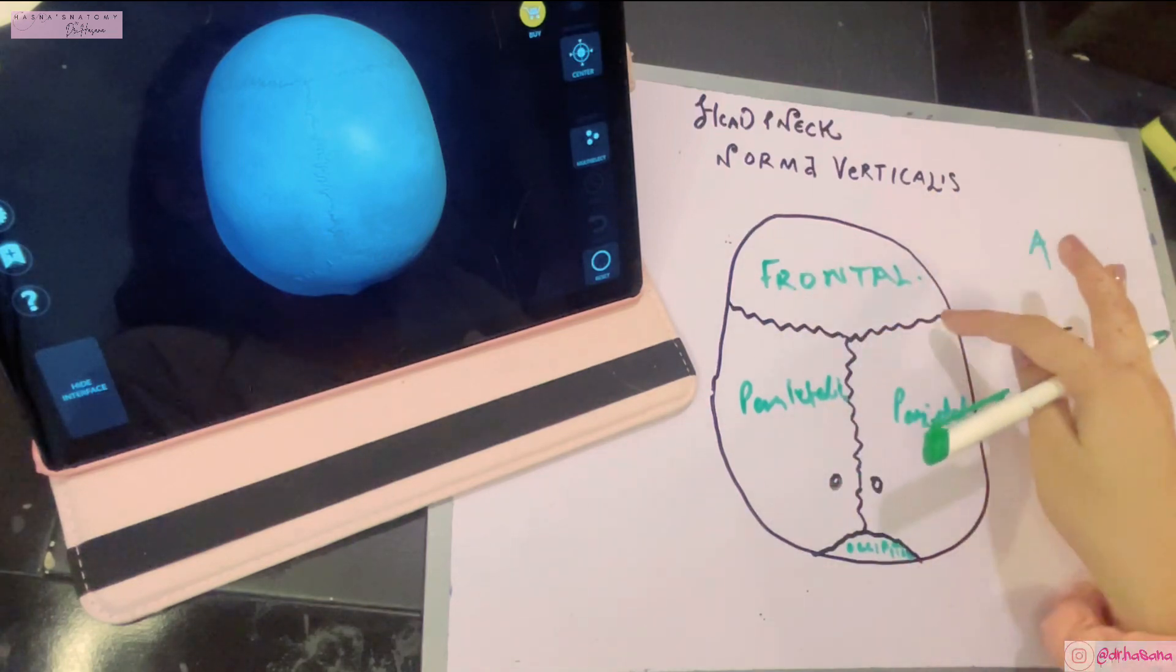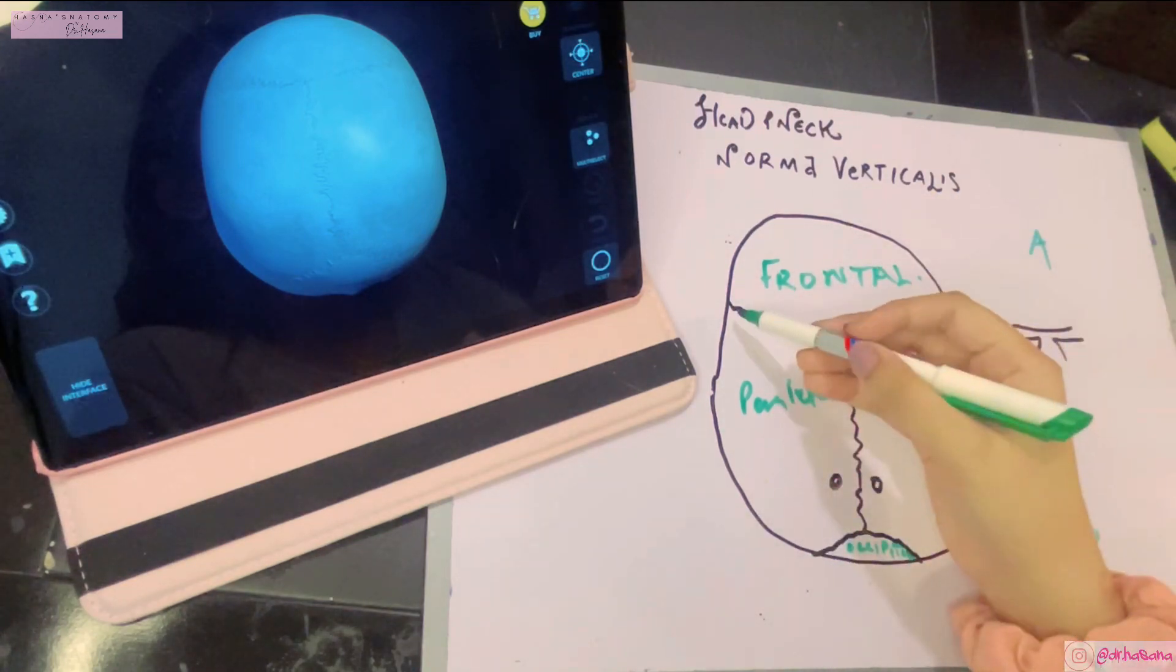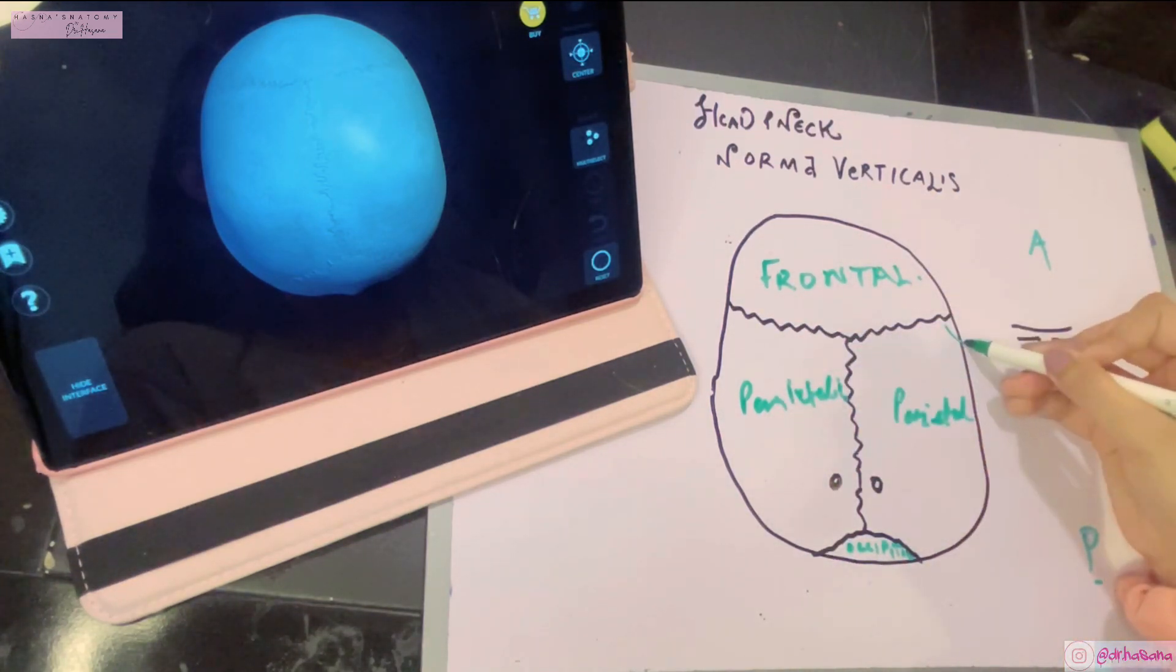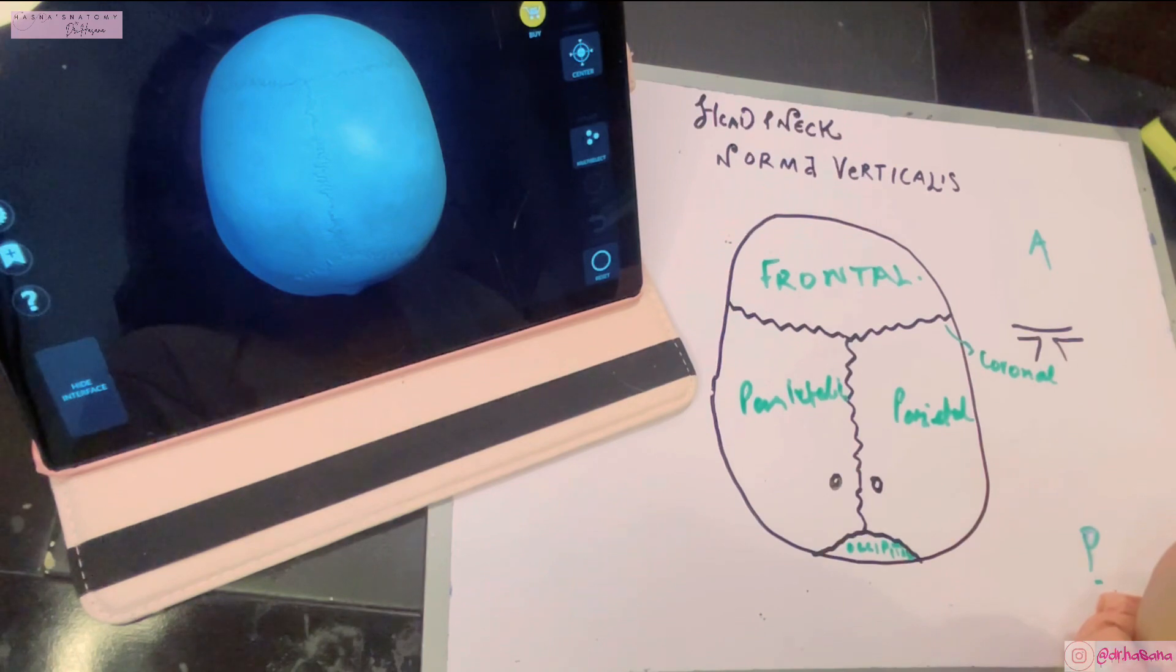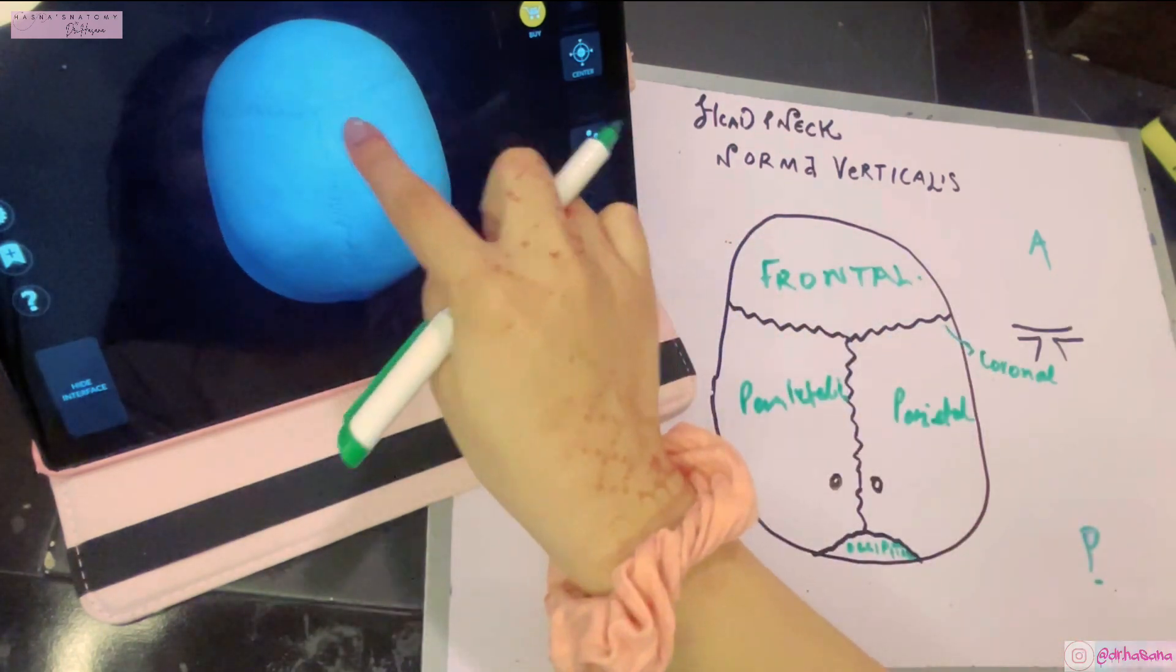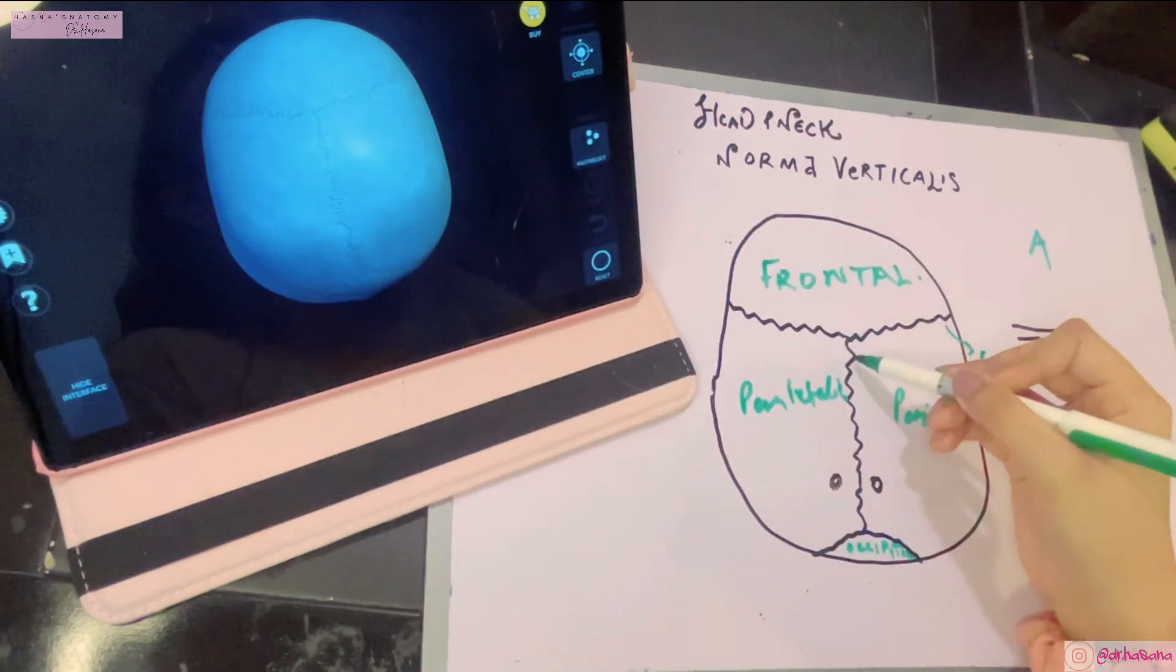The frontal bone meets the two parietal bones at this suture which is known as the coronal suture. The coronal suture is running from one side to the other side of the superior aspect of the skull. Then we have this suture which is lying in the median plane between the two parietal bones, known as the sagittal suture.